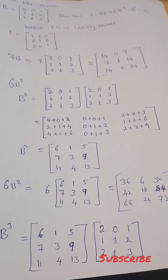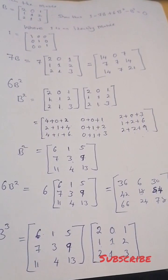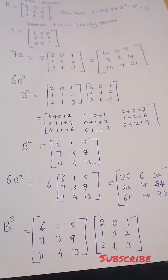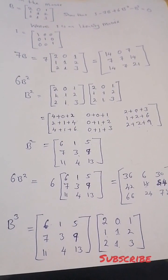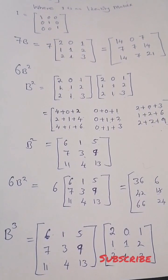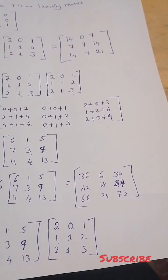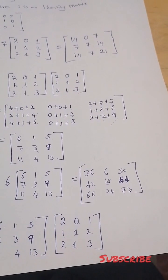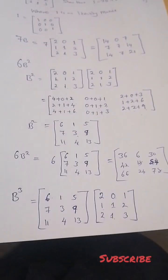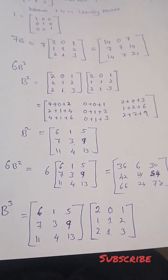Next we solve 6B squared. We take matrix B and multiply it by itself to get B squared: 6, 1, 5, 7, 3, 9, 11, 4, 13. Then we multiply that result by 6 to get: 36, 6, 30, 42, 18, 54, 66, 24, 78.